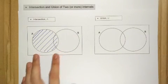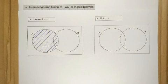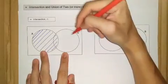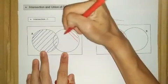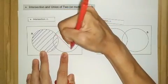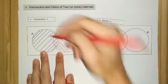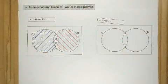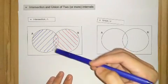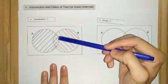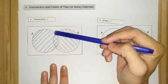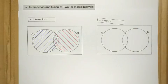We do the same for set B using a red line. To find the intersection between these two sets, we consider the area where the blue line and the red line intersect each other. So this area will be the intersection of the blue and the red line, which means the intersection between set A and set B is just this overlapping region.